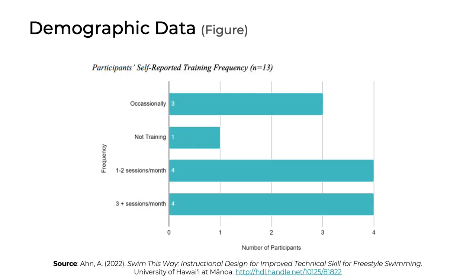Here's another example using a horizontal bar chart about participants' self-reported training frequency. The chart's y-axis shows categories of training frequencies, and the x-axis shows the number of participants — the longer the bar, the more people fell into that category. In this case, the participants were somewhat dispersed in terms of their training frequency, which was likely relevant to their perception of the instructional module used in this project.